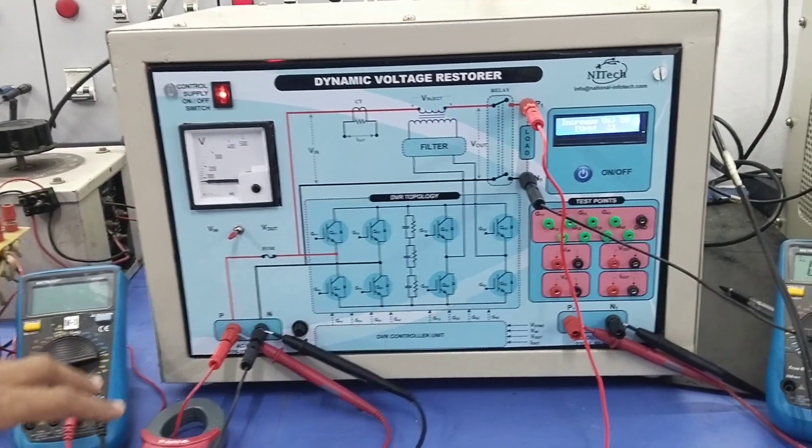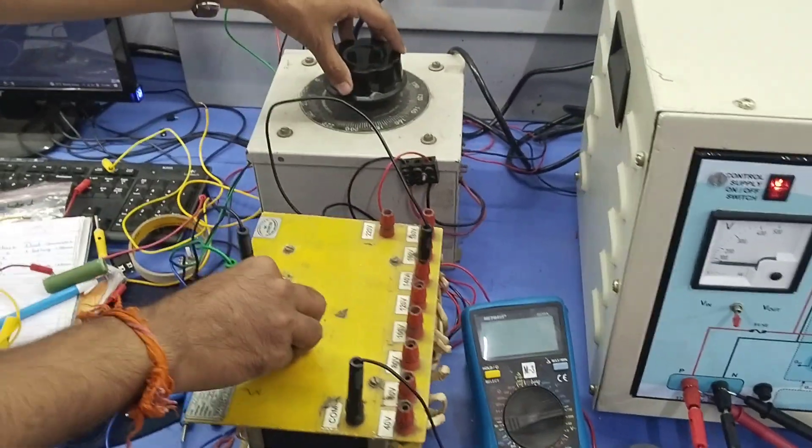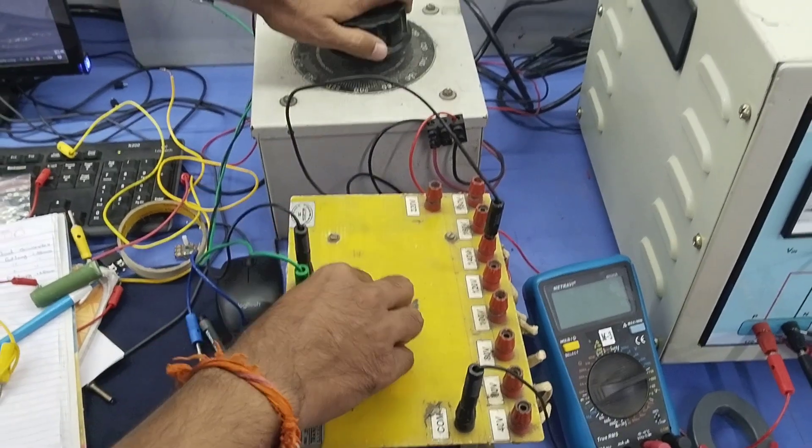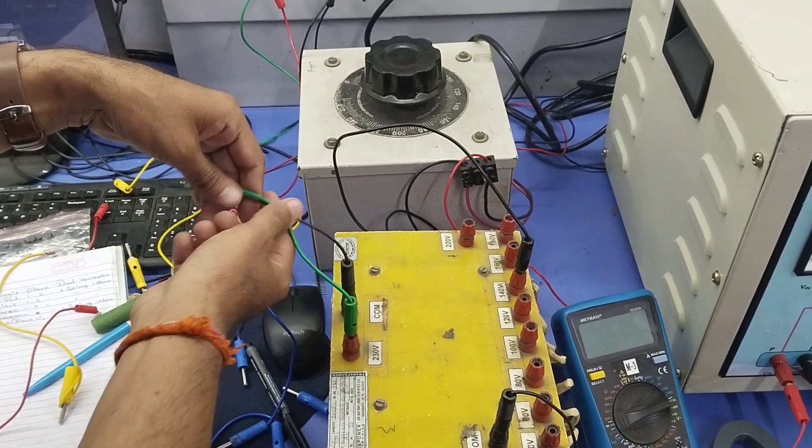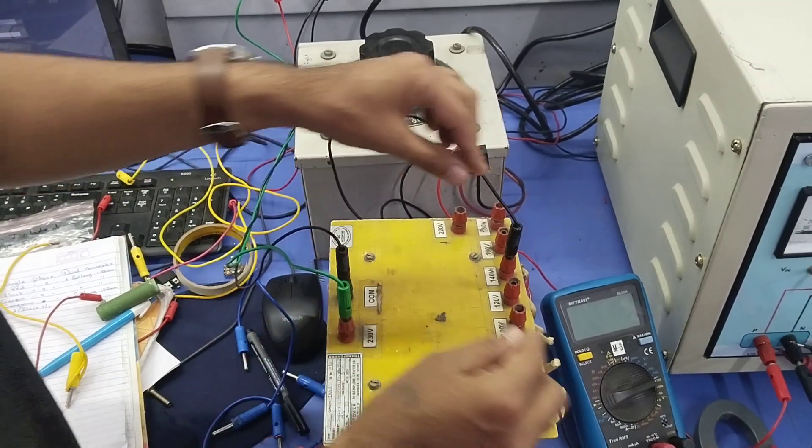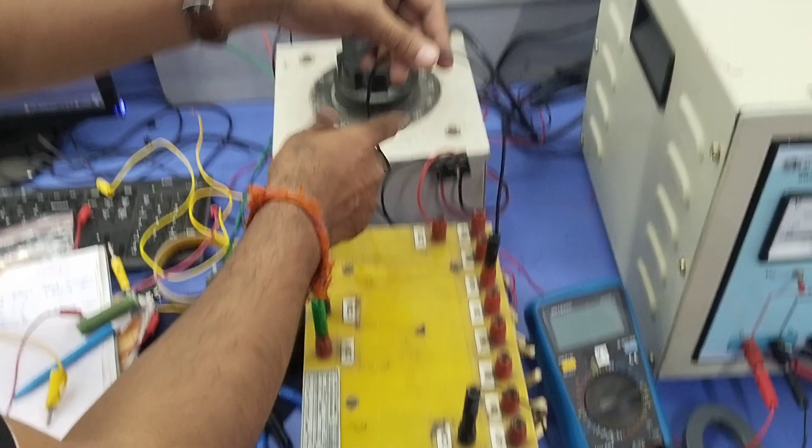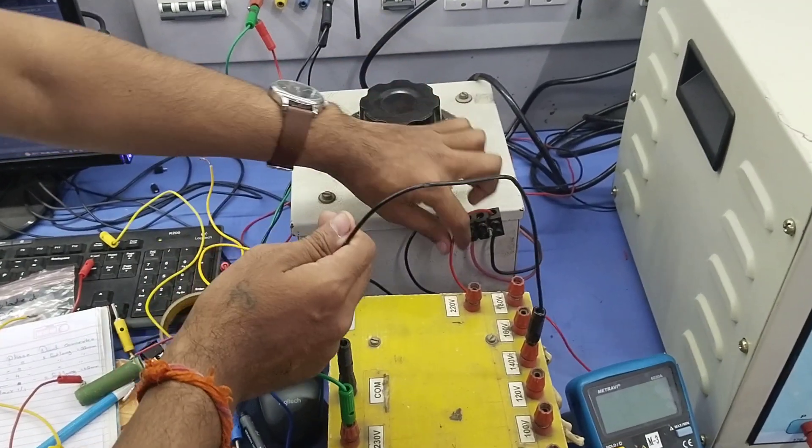Two transformers are connected in series, where one is a fixed transformer and another is a variable transformer. Here, 230V is given from the regular supply. The 230V is stepped down to 140V, so this 140V is again connected in series with this variac.